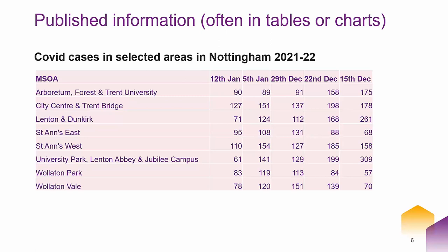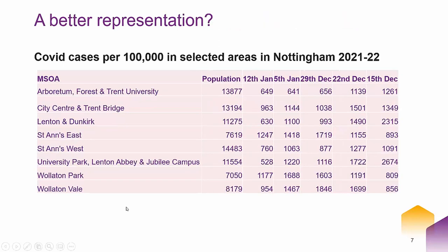The way we tend to report these is to use what's called a rate — the standard rate for COVID is cases per 100,000. I've now standardised those cases so it's easier to compare between different areas. In particular, the Wallerton and St. Anne's East areas are much smaller than the others, so if we just compared raw numbers we'd get quite a different picture. The rate in St. Anne's East is actually quite high, whereas the raw number wouldn't appear out of place against some of the other areas.